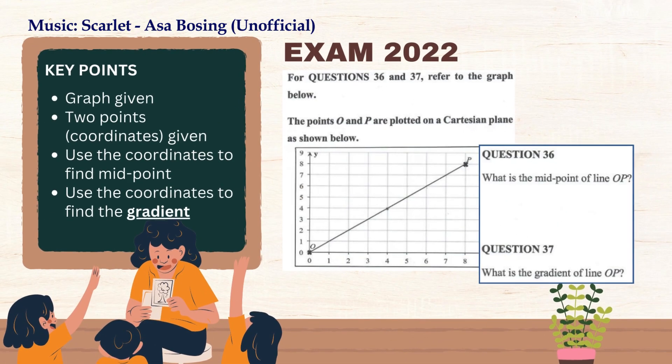Finally, let's look at year 2022 exam, question number 36 and 37. Apparently, we could see that the setting is similar to the last two exam questions we discussed. However, question 36 is asking us to find the midpoint between the two points. So all we need to do to answer question 36 is to use the midpoint formula to find the coordinates. For now, take a moment to look through the questions.